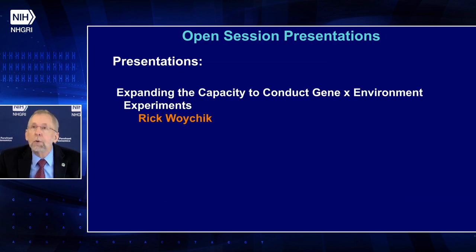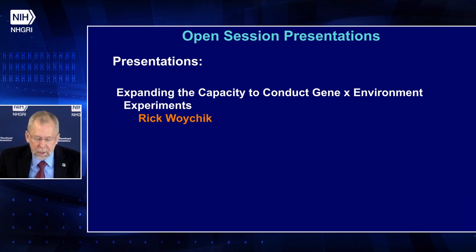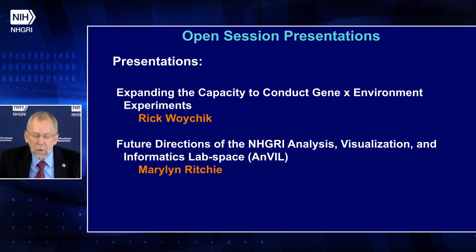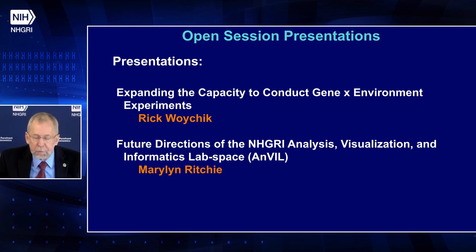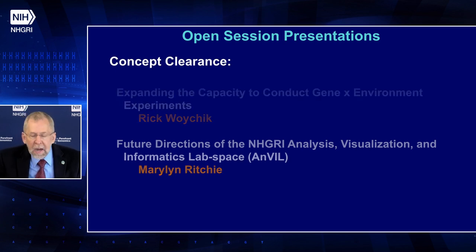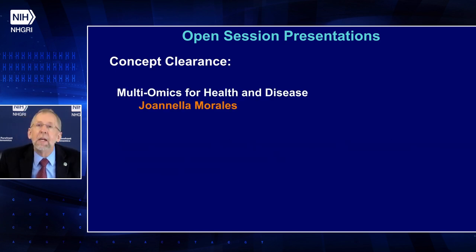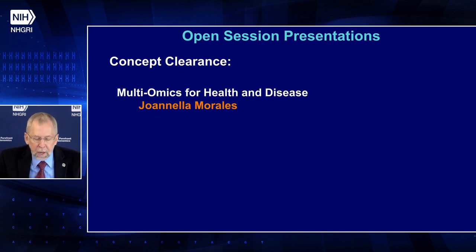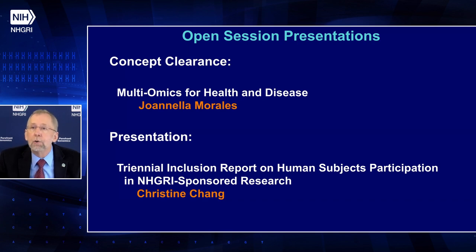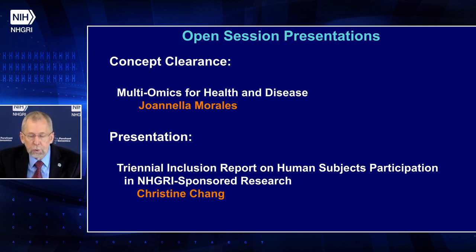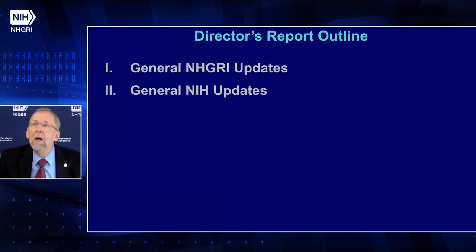Following my director's report, Rick Wojcik, director of NIH's National Institute of Environmental Health Sciences, will speak about expanding the capacity to conduct gene-by-environment experiments. Next, Marilyn Ritchie, director of the Center for Translational Bioinformatics at the University of Pennsylvania School of Medicine, will present a report from the future directions of the NHGRI ANVIL workshop. There will also be a concept clearance on Multi-omics for Health and Disease, and a presentation on the triannual inclusion report on human subjects participation in NHGRI-sponsored research.